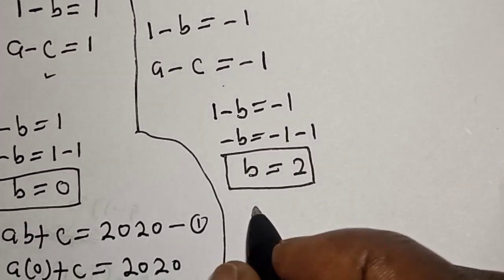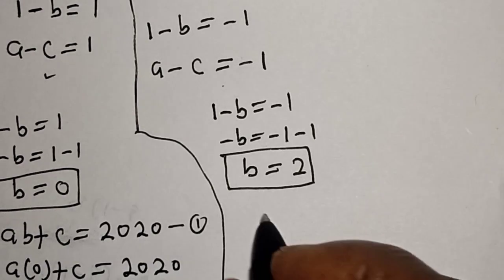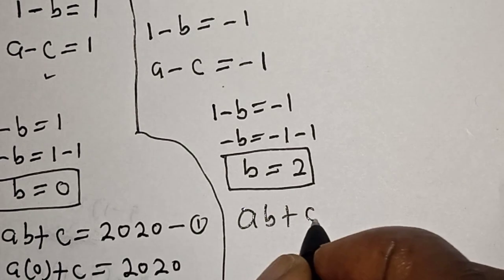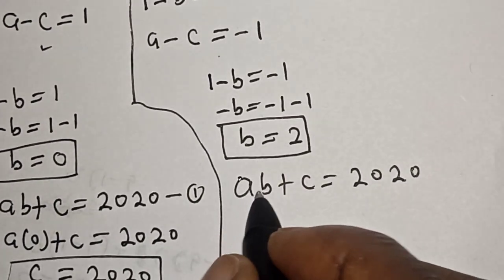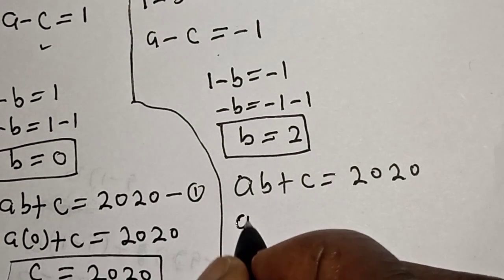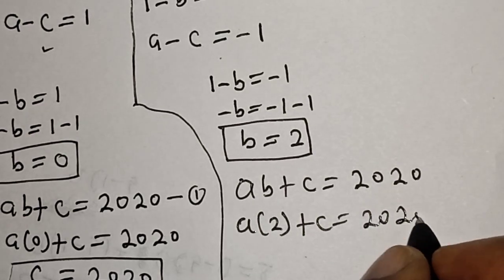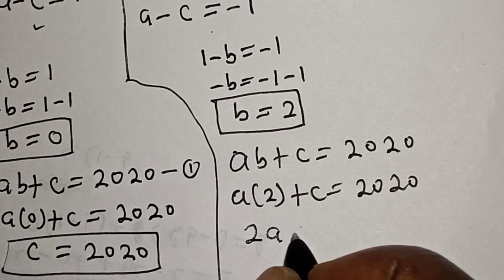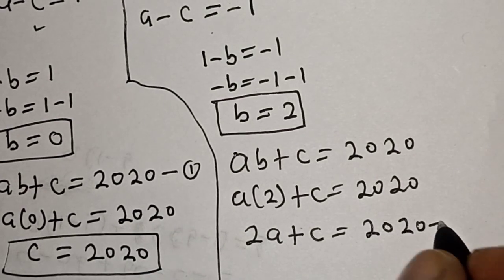Now let's substitute B = 2 into equation 1: A(B + C) = 2020 becomes A × 2 + C = 2020, so 2A + C = 2020. Let's call this equation star.